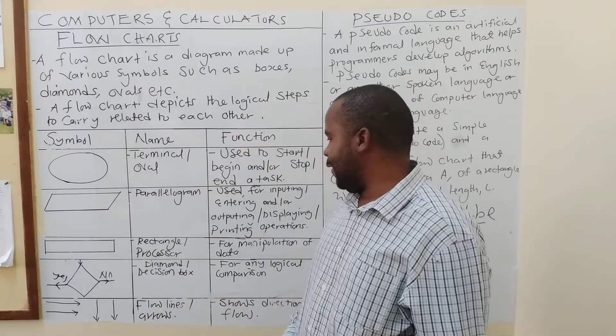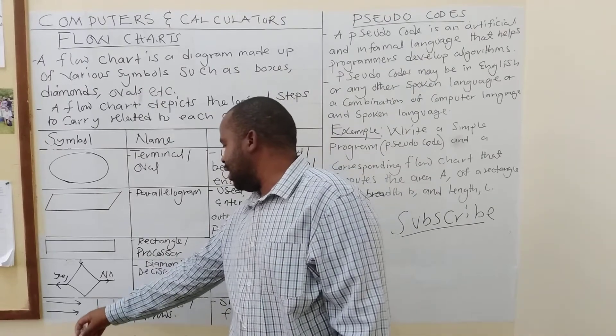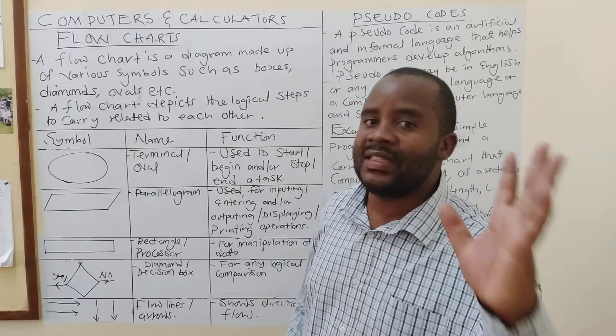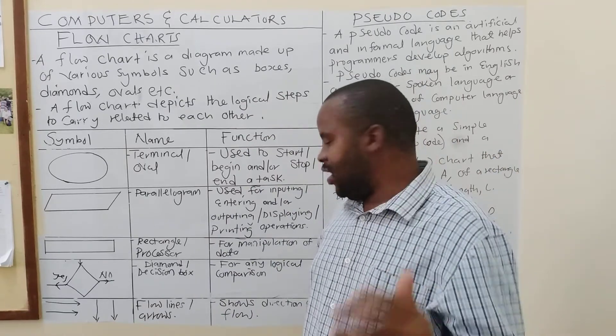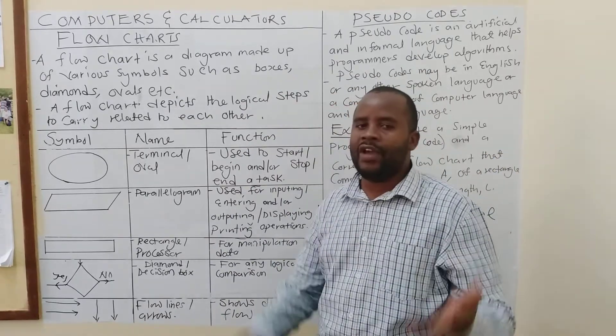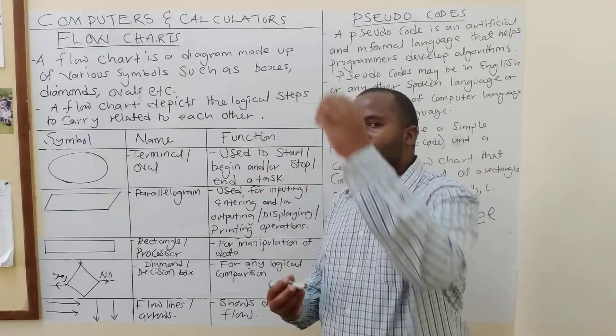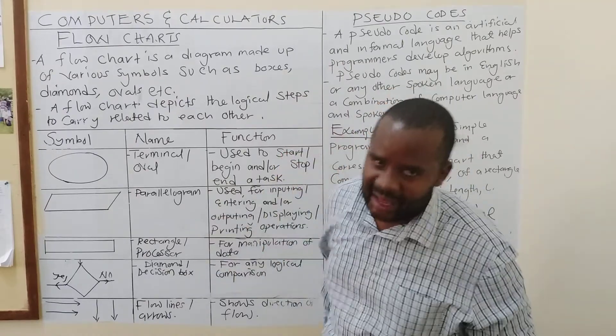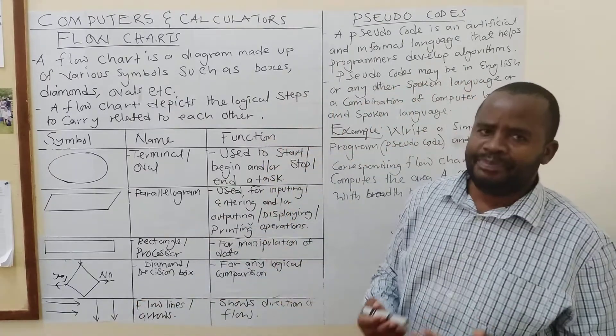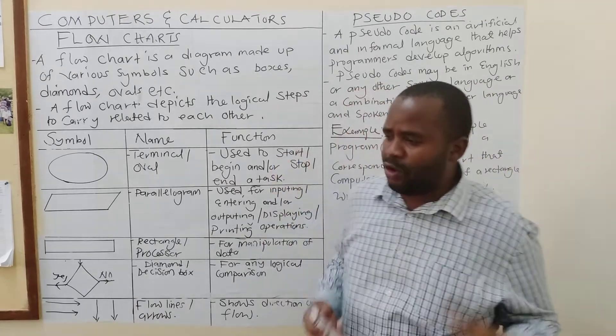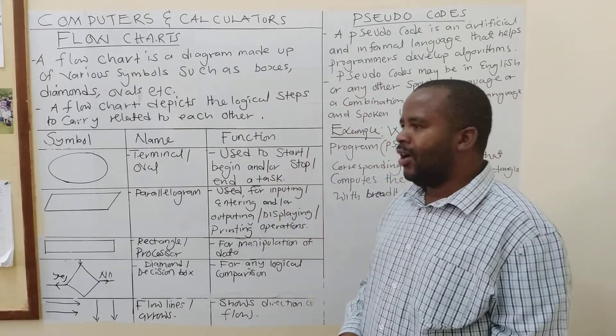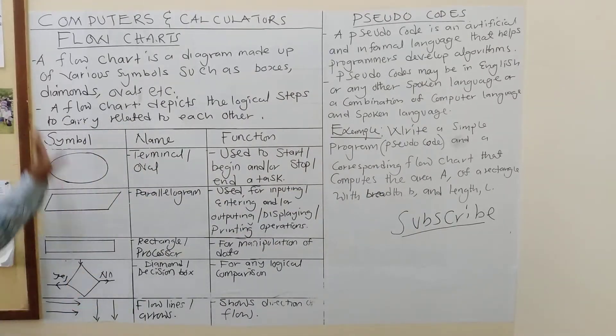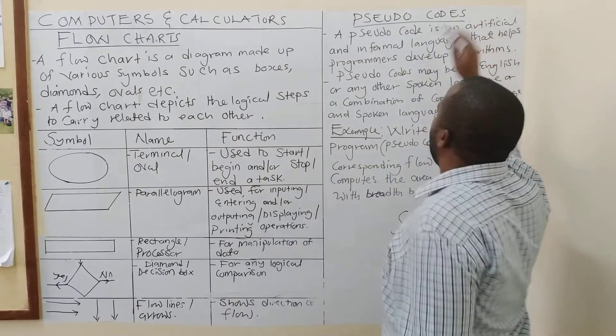So, if you want to make a decision box, you are going to use that symbol. Then, there are other important things that we need to look at. And, in this case, we are trying to talk about these arrows, flowchart arrows. These will just show you the direction of a flow, how each part of a flowchart or each symbol is related to the other. Now, what is a pseudocode?